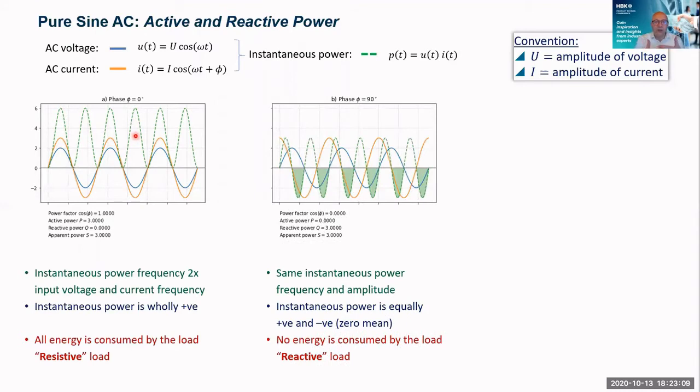Now if the current was offset by 90 degrees, φ = 90 degrees, we notice now it changes. So we've still got the same frequency of power and the same amplitude, but we notice now that the mean is at zero. So there's equal amounts of negative energy, if you like, as positive energy. So if we look at the energy, it now equates to zero. So no energy is being consumed by the load. We call that a reactive load.